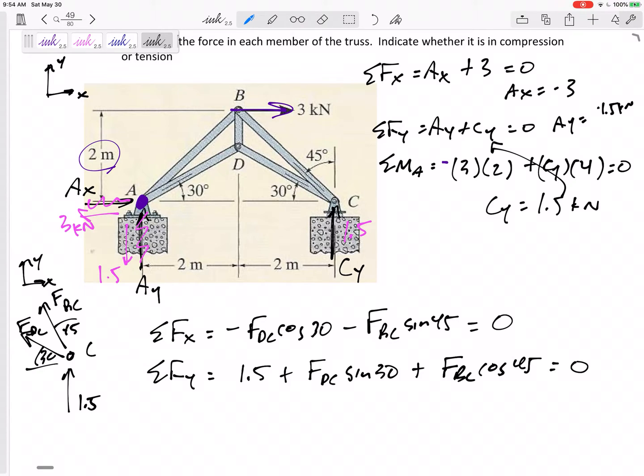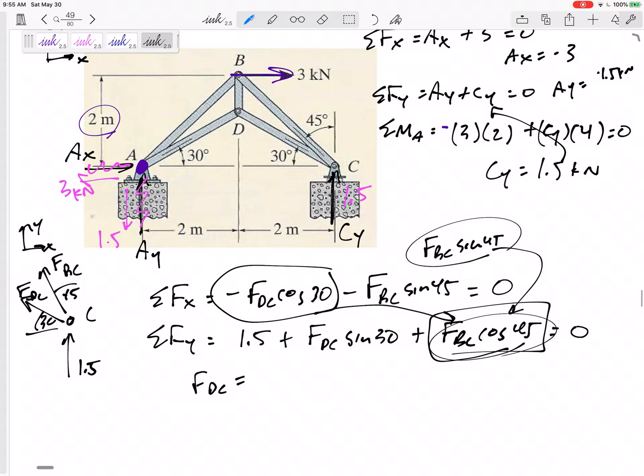And now it's okay if you have two unknowns in both of those equations. Two equations, two unknowns, you should be able to solve for. Generally, I like to use substitution and I would write FBC is equal to something and plug it into the other equation. But when you have a 45 degree angle, FBC, you could just solve FBC sine 45 and plug it in for FBC cosine 45. I could say FBC sine 45 is equal to negative FDC cosine 30. Solve for FDC. I would get FDC is equal to positive 4.1 kilonewtons. Positive means I chose correctly. I chose tension.